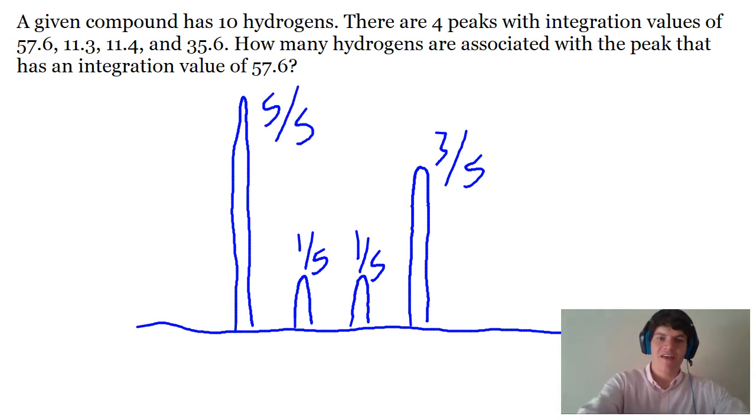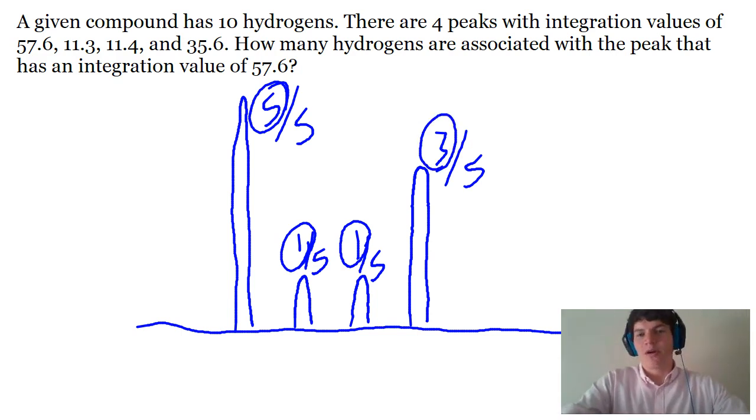And notice that five plus one plus one plus three adds up to ten, therefore if each of these peaks represented a certain number of hydrogens, I could simply say that the tallest peak has five hydrogens, the second peak here has one hydrogen, third peak represents one hydrogen, final peak represents three hydrogens. That's one way to work through this problem.